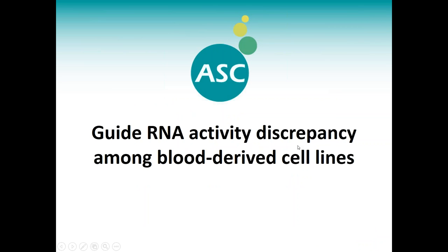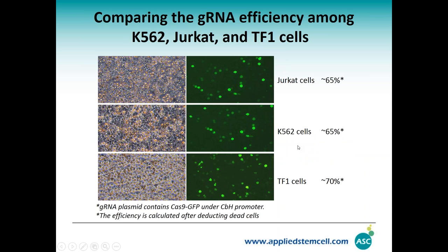In some of our projects we used one guide RNA in a cell line that was very successful, but once we used this guide RNA in other cell lines it turned out it was not as efficient. We found a couple of cases like this, so we decided to do a thorough study to compare guide RNA activity among three major cell lines. The three cell lines we used are K562, Jurkat, and TF1 cells — these three are the most frequently requested by customers.